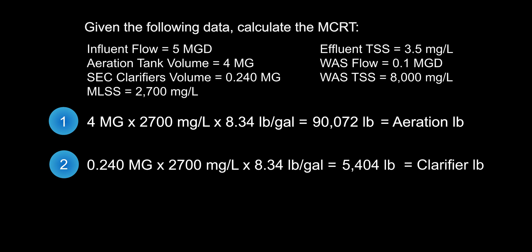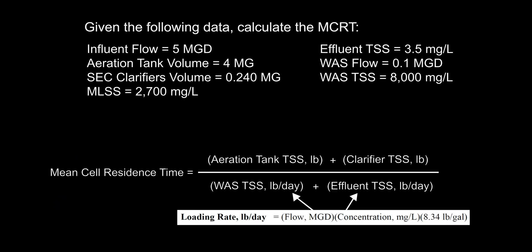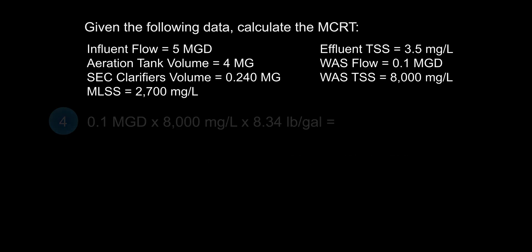For the third step, we combine our last two answers to get the total pounds for the top half of the MCRT equation: 90,072 pounds plus 5,404 pounds equals 95,476 pounds — the total amount of bugs in our aeration and clarifier systems. Next, we move to the bottom half. Using the loading rate formula, we solve for pounds per day of wasted activated sludge leaving the plant: WAS flow of 0.1 MGD times WAS TSS of 8,000 mg/L times 8.34 lb/gal gives us 6,672 pounds per day of WAS.